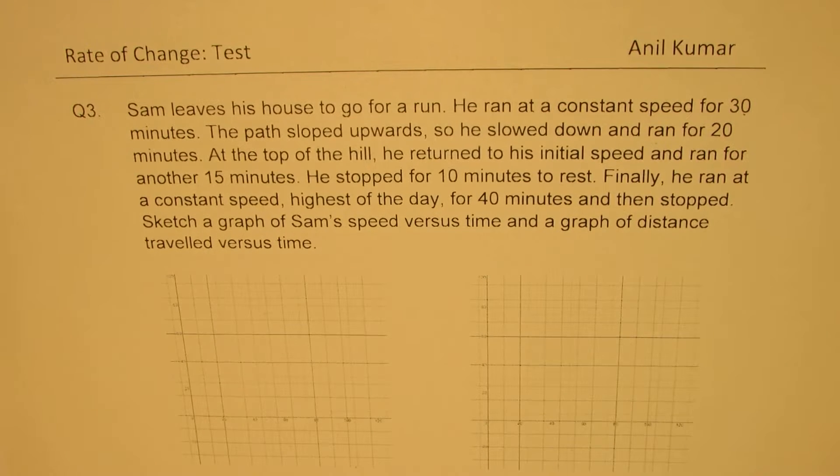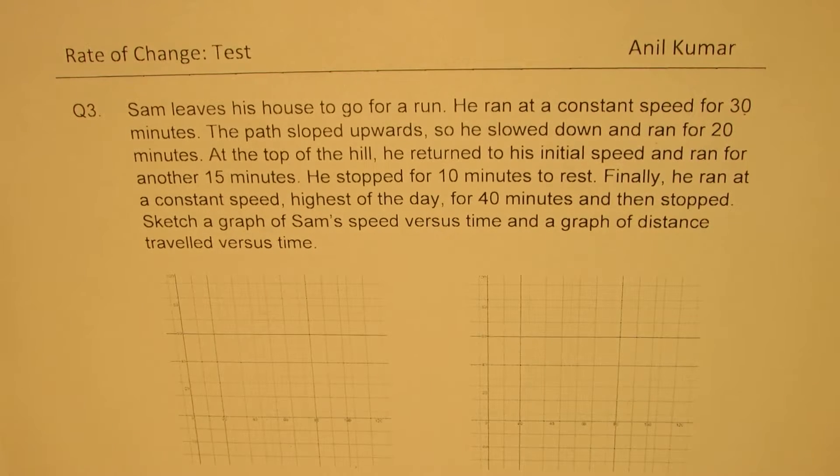Question number 3. Sam leaves his house to go for a run. He ran at a constant speed for 30 minutes. The path sloped upwards so he slowed down and ran for 20 minutes. At the top of the hill he returned to his initial speed and ran for another 15 minutes. He stopped for 10 minutes to rest. Finally he ran at a constant speed, highest of the day, for 40 minutes and then stopped. Sketch a graph for Sam's speed versus time and a graph of distance traveled versus time.